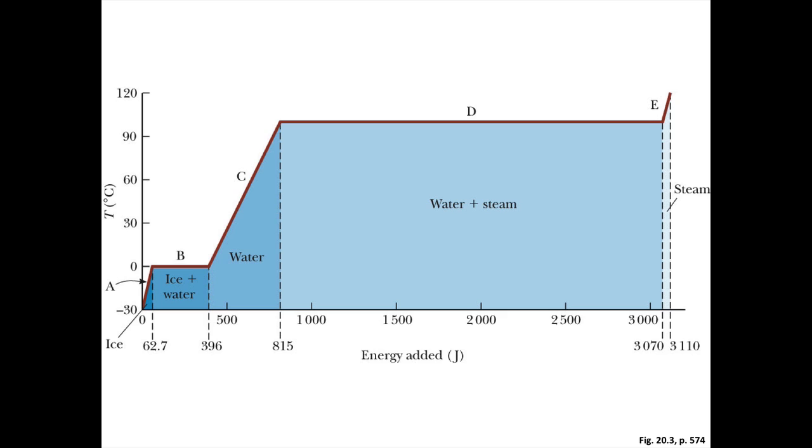Now, this graph shows what happens to ice as we add energy at a constant rate. So we start with ice at minus 30 degrees C. As we add energy, it initially goes into raising the temperature of the ice. So the energy has been added at a constant rate, so the temperature of the ice changes at a constant rate.